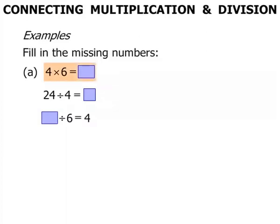So let's do the first part. 4 times 6 equals 24. Did you remember your times tables? 4 sixes are 24.